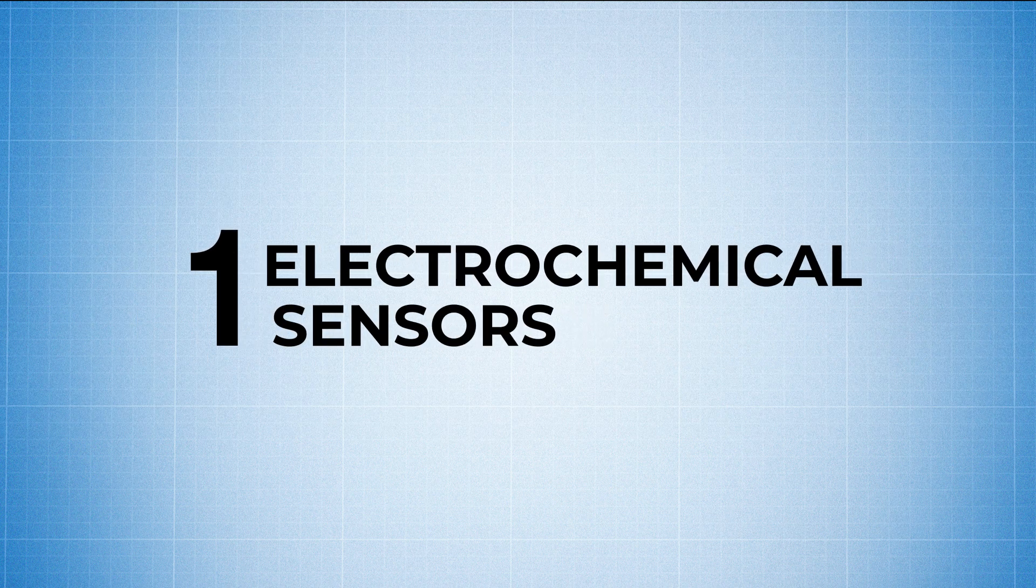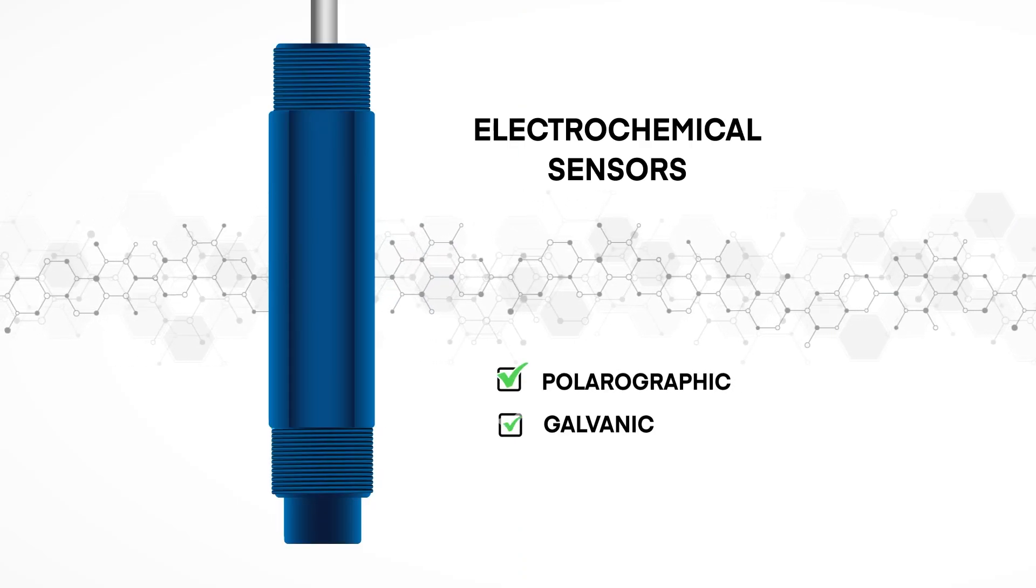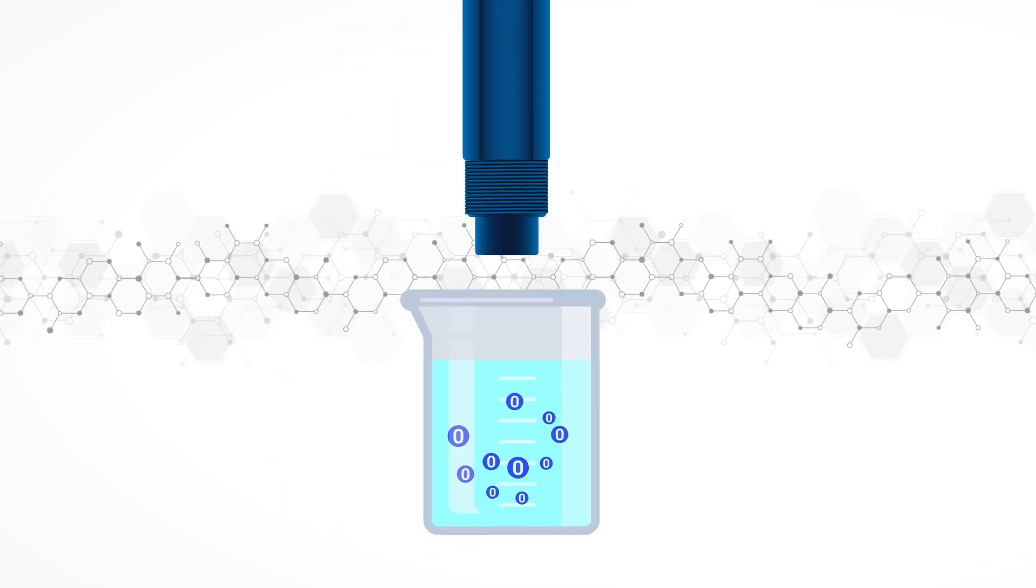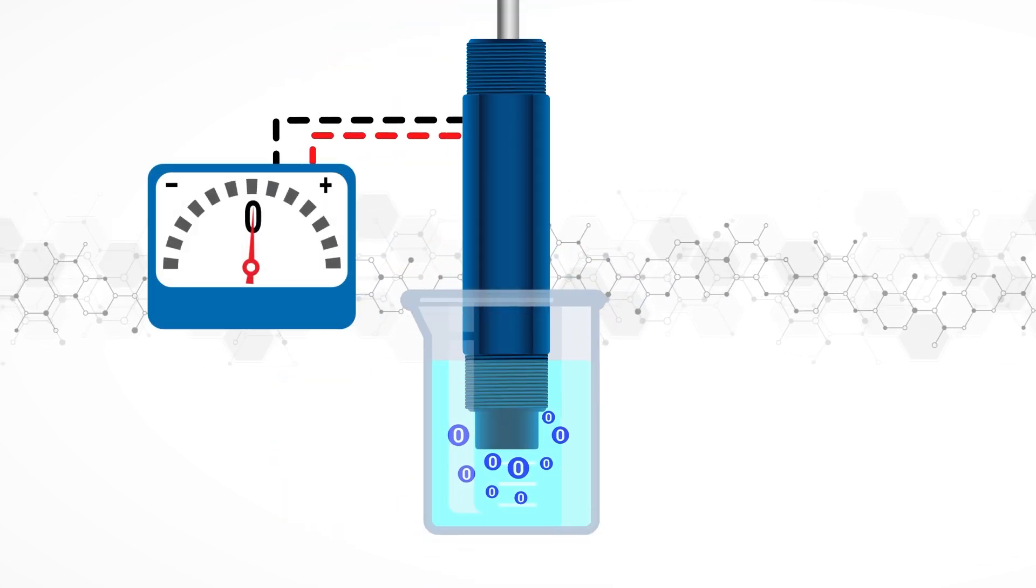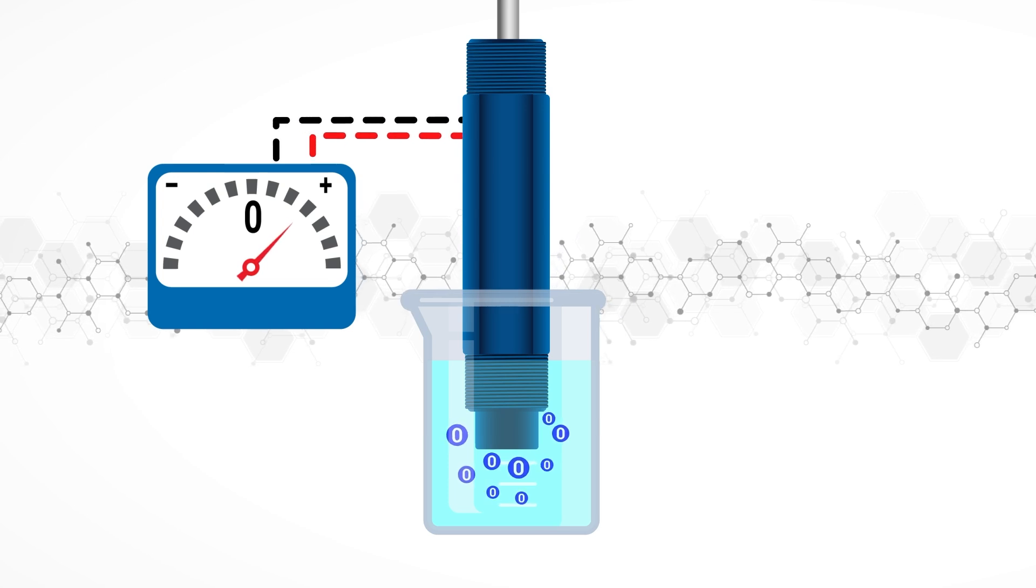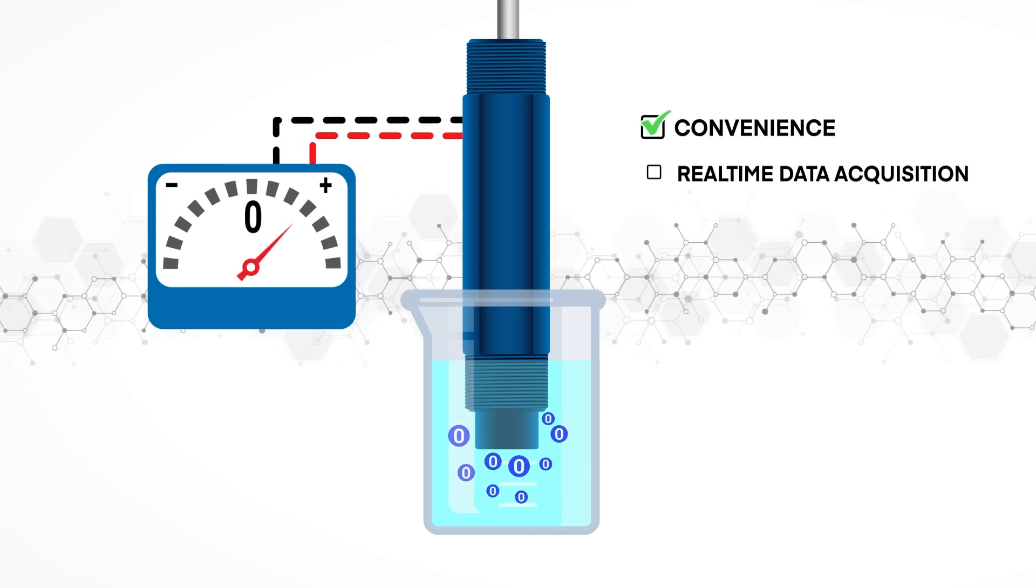Electrochemical sensors, which include polarographic and galvanic types, measure dissolved oxygen using an electrode immersed in water. The sensor generates an electrical current proportional to the amount of oxygen present. These devices are commonly used due to their convenience and real-time data acquisition.